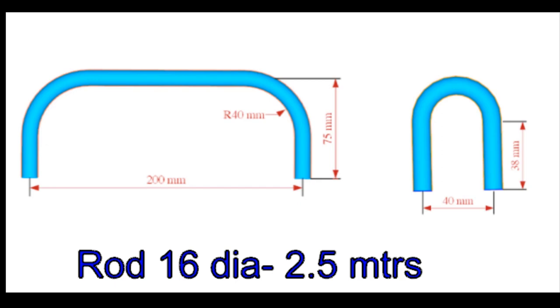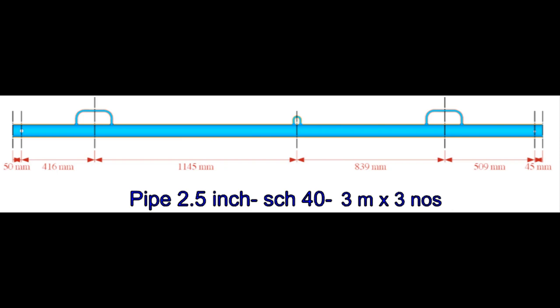The legs of the tripod are made from 2 1⁄2-inch, schedule 40 pipe. The length of each leg is 3 meters.